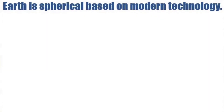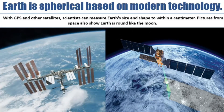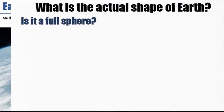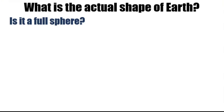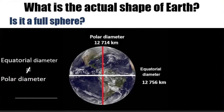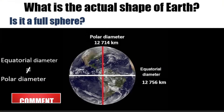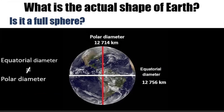Now let's see whether we can use modern technology to show that Earth is spherical. With GPS and other satellites, scientists can measure Earth's size and shape to within a centimeter. Pictures from space also show Earth is round like the moon. In this part of the lesson, you can learn what the actual shape of Earth is. Do you think it's a full sphere? Let's see. Polar diameter is 12,714 kilometers and equatorial diameter is 12,756 kilometers. If it is a full sphere, these two lengths should be equal, but they are different.